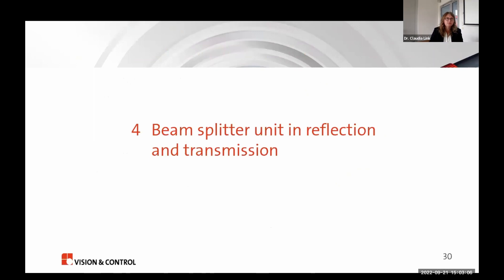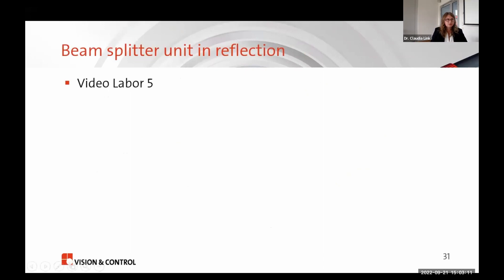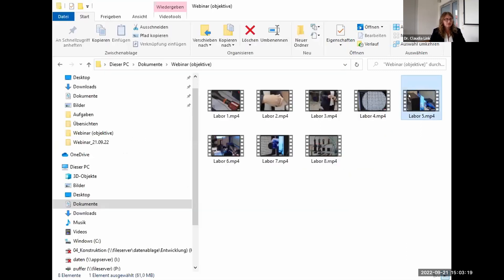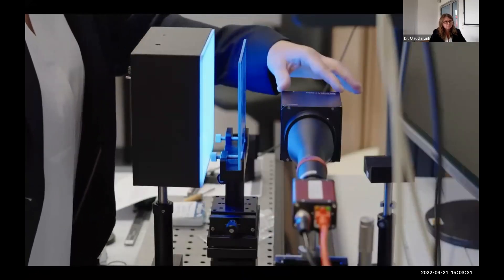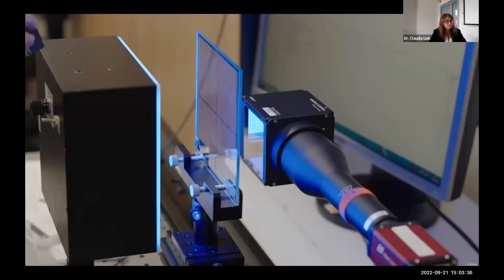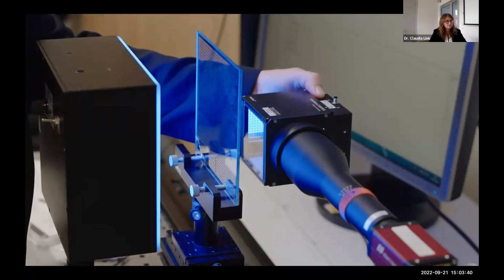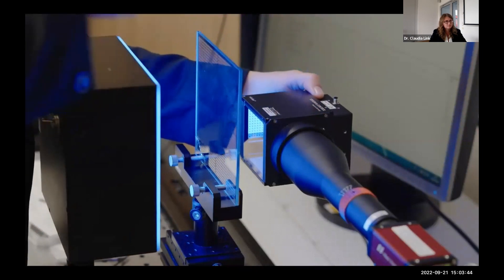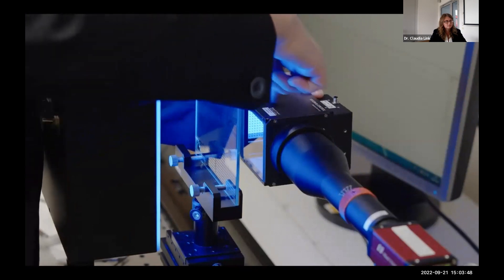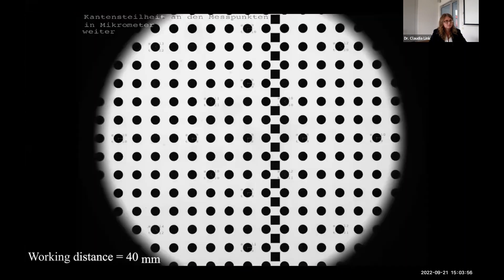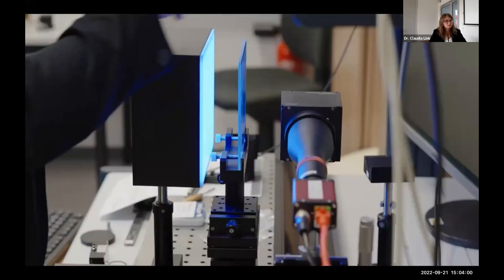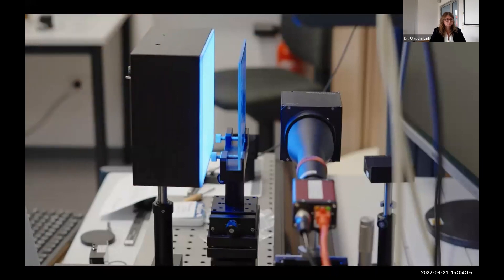Now I want to come to the beam splitter unit, used in reflection or transmission. The adapter fits the lens and allows imaging of objects in reflection with the help of a top illumination. When using the reflection path, you get a sharper image since the beam path does not pass through the inclined glass plate — in contrast to transmission, where it does.